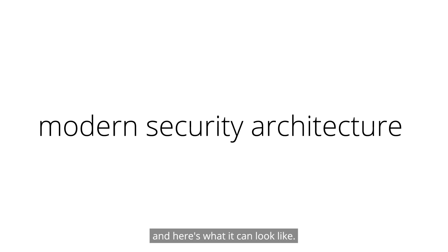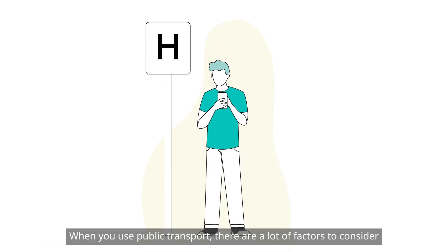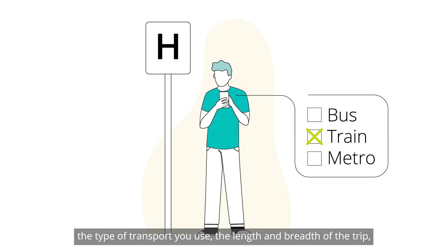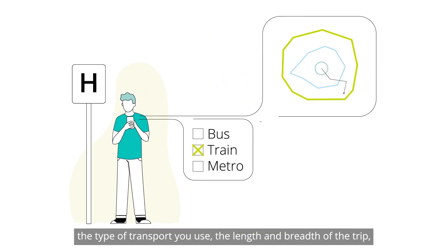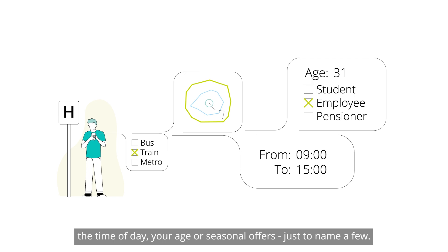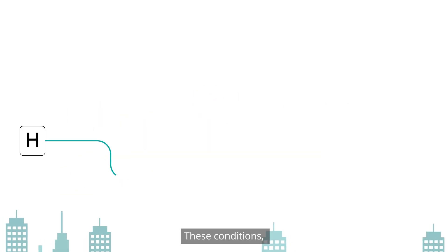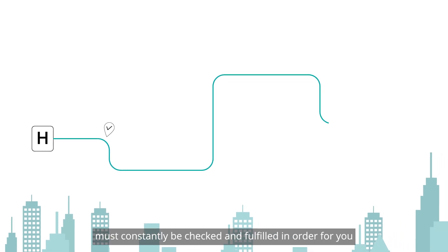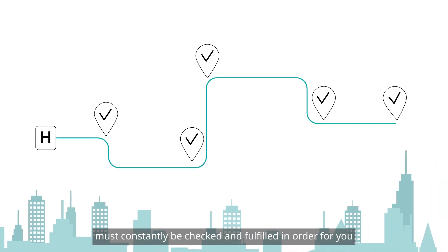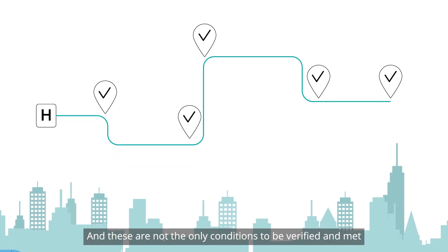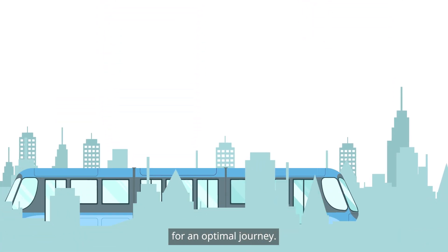Here's what it can look like. When you use public transport, there are a lot of factors to consider in making sure you have a valid ticket: the type of transport you use, the length and breadth of the trip, the time of day, your age, or seasonal offers, just to name a few. These conditions — some that might change from one leg of the trip to the next — must constantly be checked and fulfilled in order for you to smoothly reach your destination.